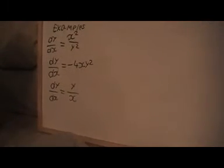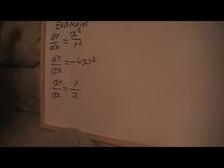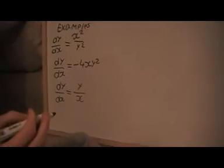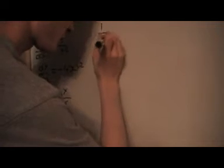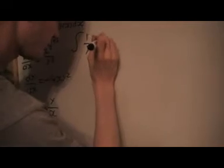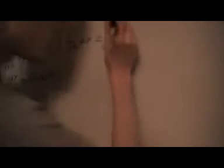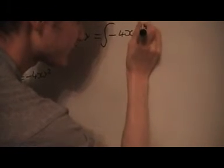Right, so let's look at the next example now. First thing I'm going to do is again separate the variables, and on this side here I'm going to get 1 over y² dy. And that's an integral. Then we're going to get an integral of minus 4x on the other side, dx.